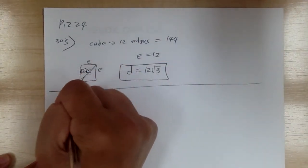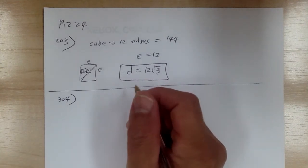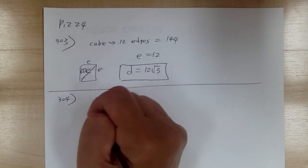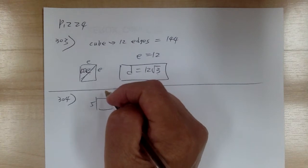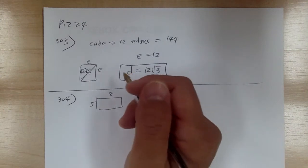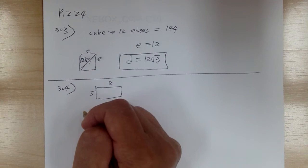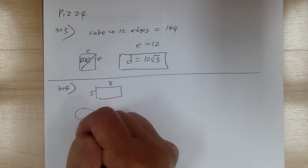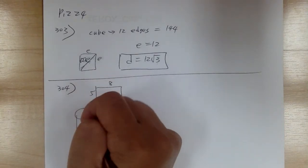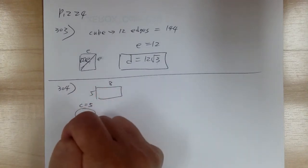Let's go to 304. You have a sheet of paper that's 5 by 8, and you're going to roll it into a cylinder. You're looking for the ratio of the volume. When you roll it, the taller one — the tall one with circumference. When you roll it, the circumference equals 5 and the height equals 8.